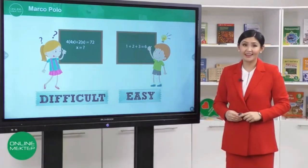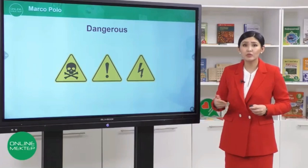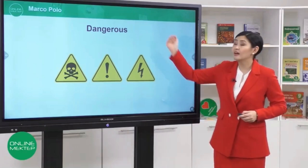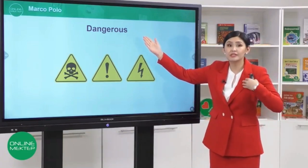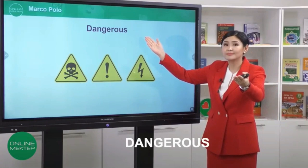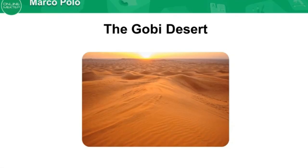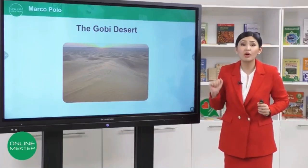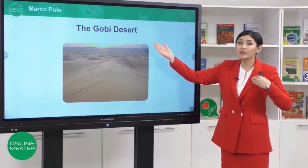Well done. Look at the picture — you must not touch objects if you see these pictures because they are dangerous. Repeat: dangerous. This is the Gobi Desert — it stretches across Mongolia and China. Can you say 'the Gobi Desert'?